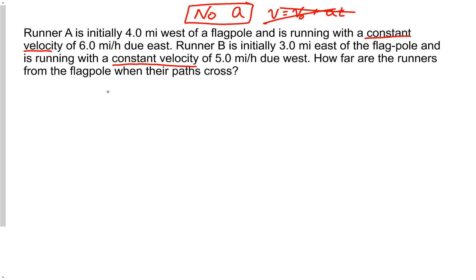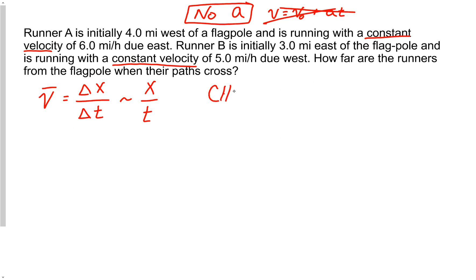For constant velocity, the only equation I even need is just my basic knowledge that average velocity is nothing but displacement over time, and a lot of times I can just use x over t for this. However, I cannot do that here because this is what I like to call a chase problem, even though the two runners are not actually chasing each other.